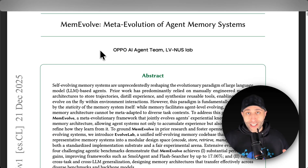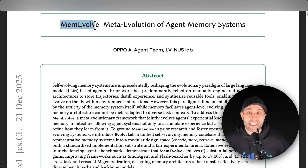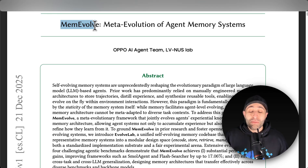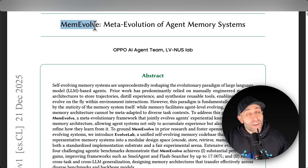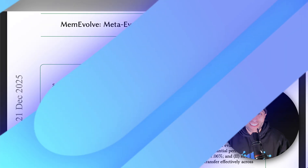Stop creating memory for your AI agents because they can create it by themselves. This is the new solution called MemEvolve, which has open-sourced a way that lets your AI agent design and evolve not only the memory but also the architecture of the memory of your project. In this video I'm going to show you how this open-source solution works and how you can use it right now in your AI projects.